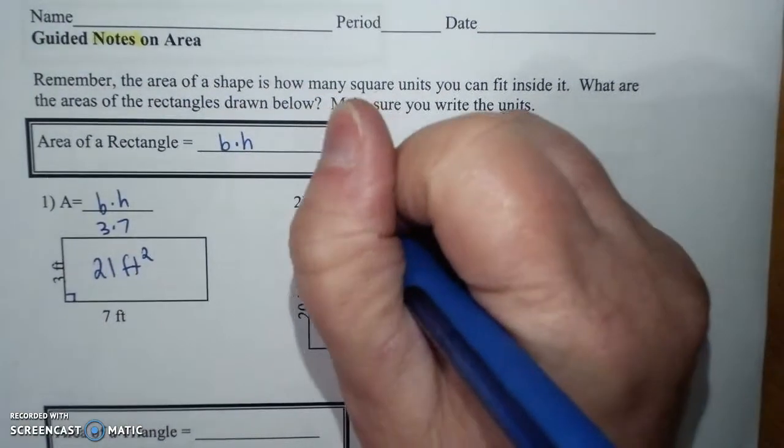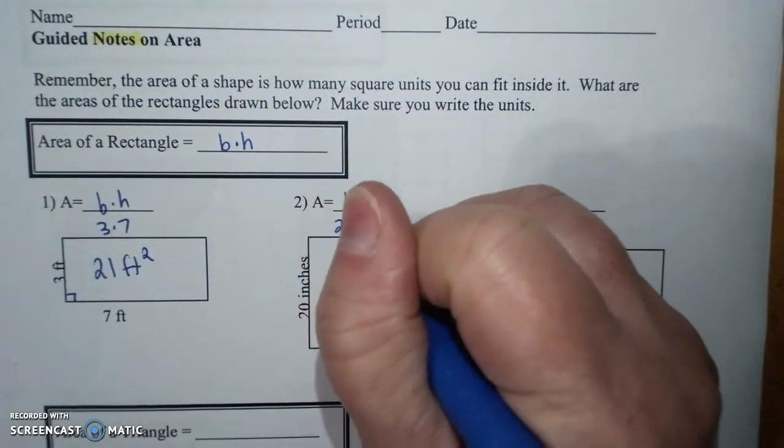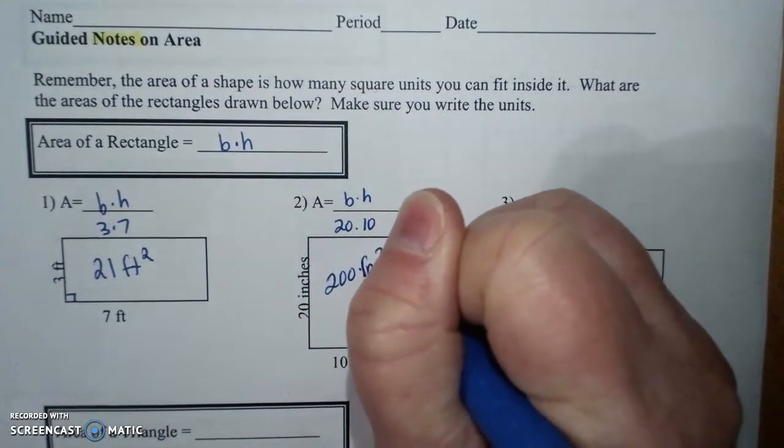Number 2. Same formula. Base times height. I have 20 times 10. I have 200 inches squared.